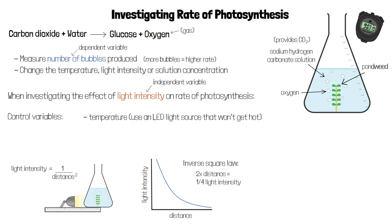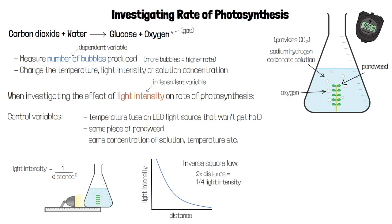If you do vary light intensity, it's important to use an LED light source. Temperature is a control variable, and filament bulbs get hot, which will affect the rate of photosynthesis. LED lamps, on the other hand, don't get hot. You also need to use the same piece of pond weed, and keep the temperature and concentration of the solution the same.